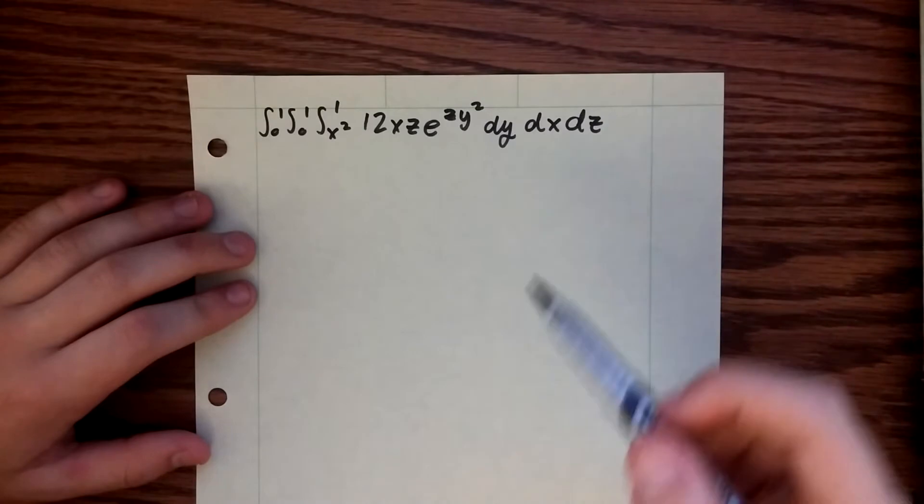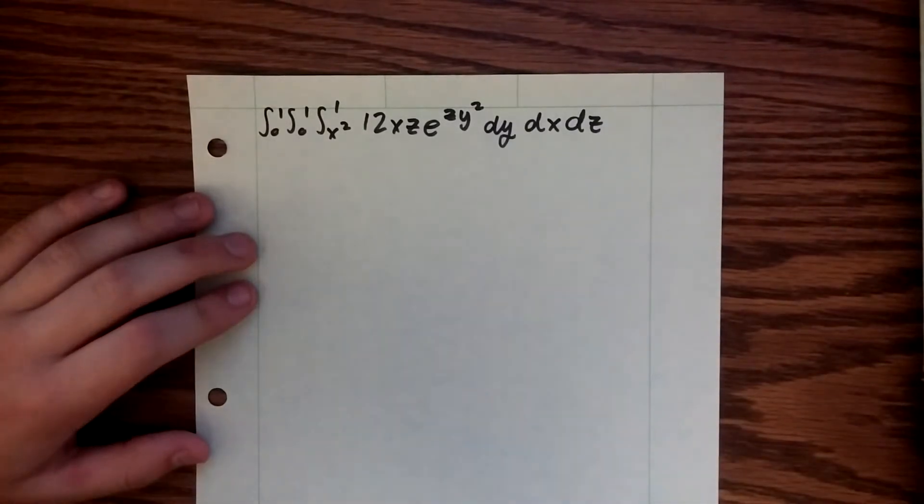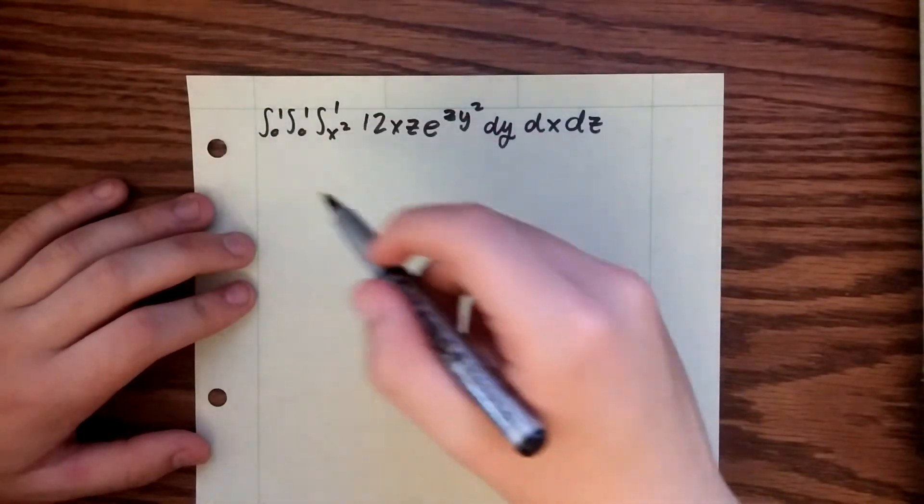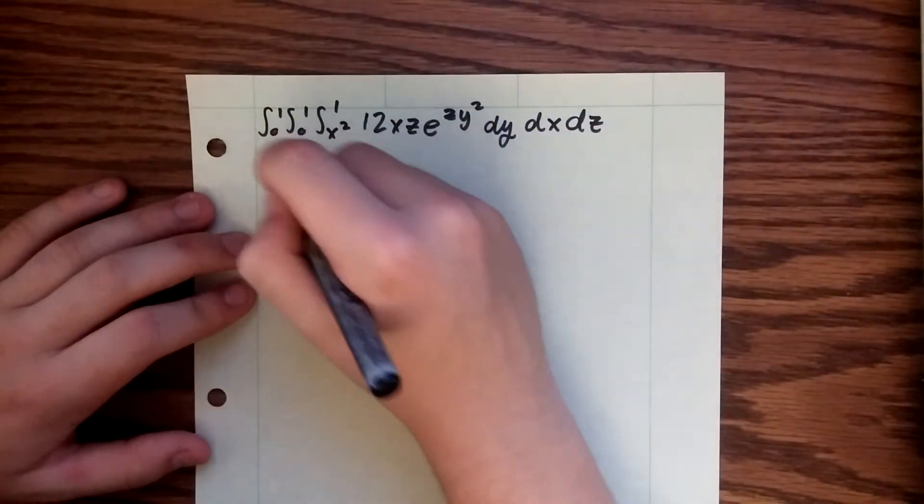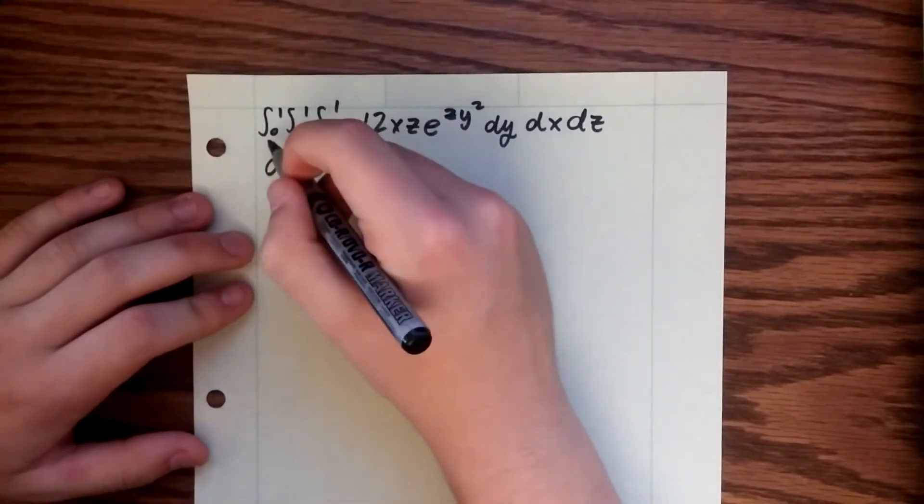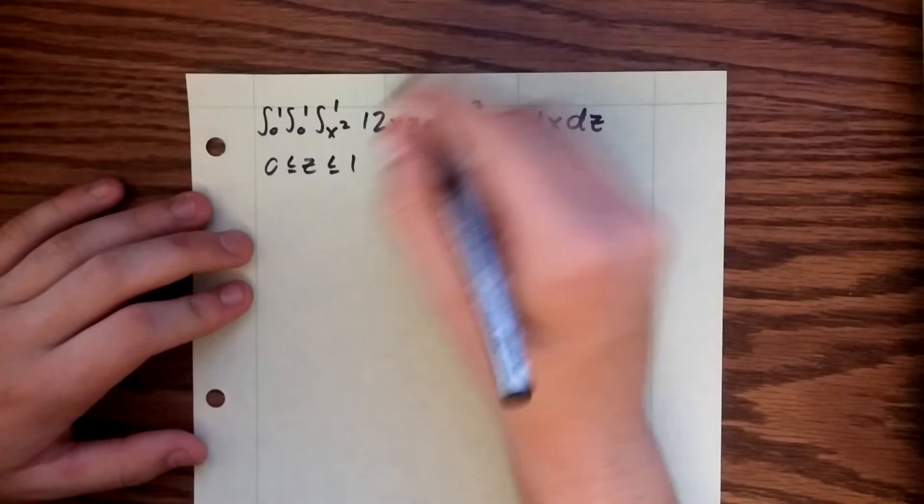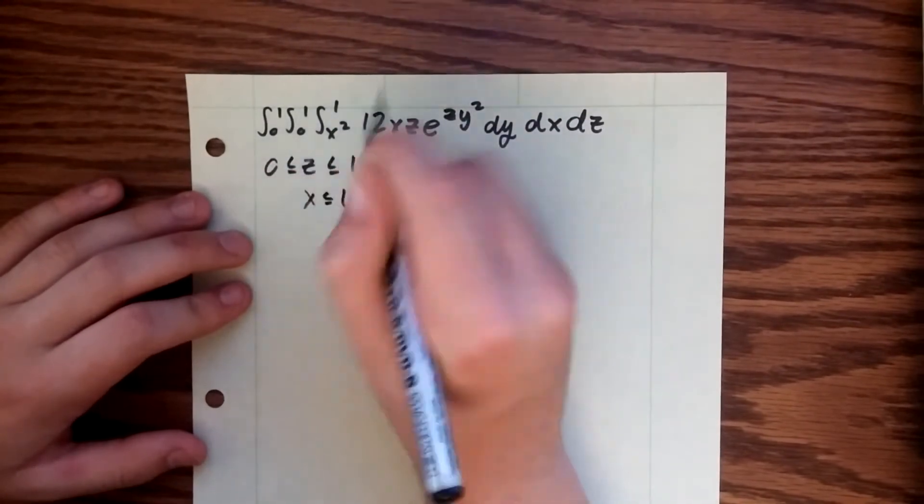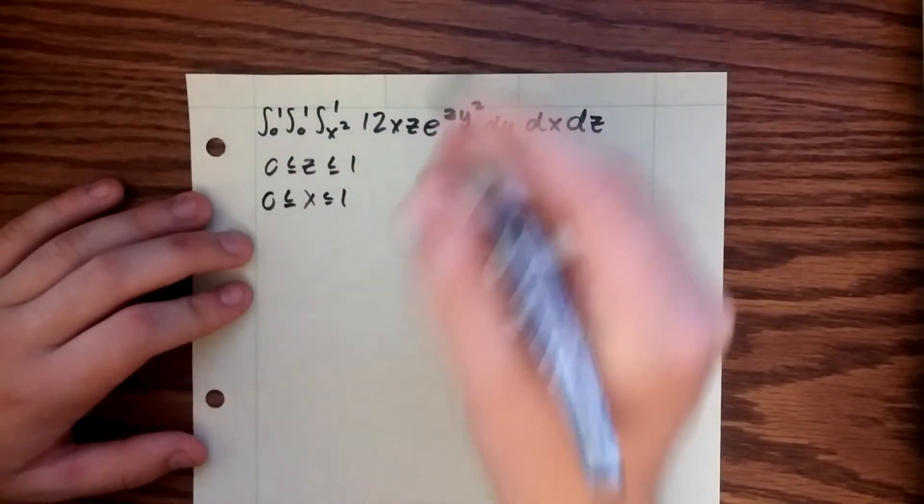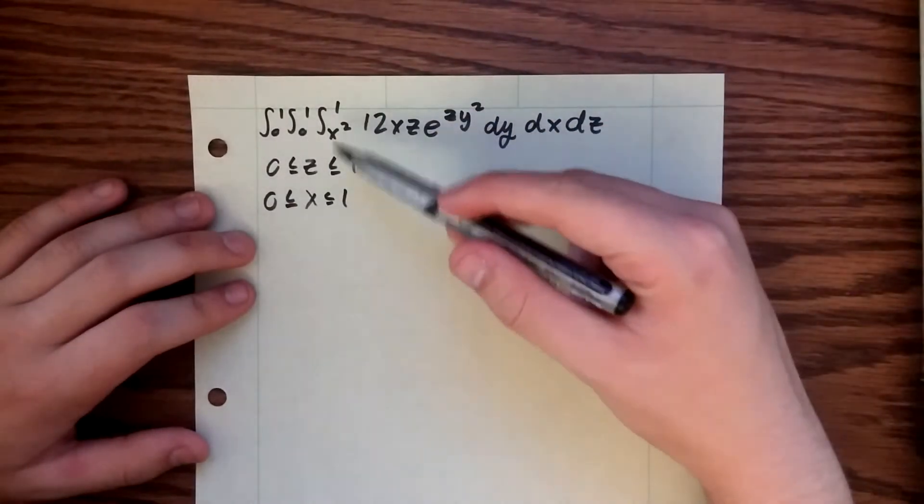So instead, what you could do is switch the order of integration and see if that makes evaluating any easier. In this case we're going to switch it to dx dy dz. To start off this problem, you're going to want to write down the bounds for each of your variables. So we have z going from 0 to 1, we also have x going from 0 to 1, and then we have our y going from x squared to 1.